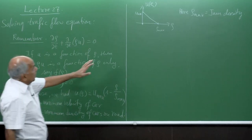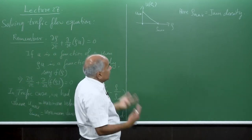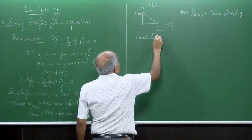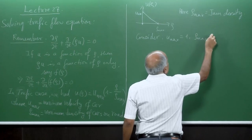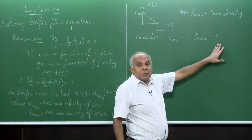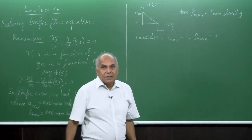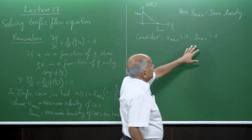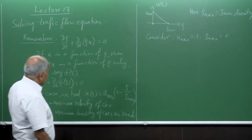Just to get a feeling, consider a simplified case where u_max equals 1 and rho_max equals 1. You could scale: for example, 40 kilometers per hour, and rho_max would be however many cars fit in 100 meters — you know the length of a car plus truck. For simplicity I am taking u_max equals 1 and rho_max equals 1.